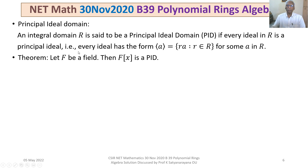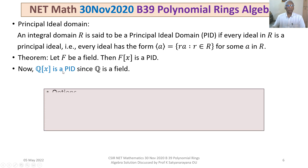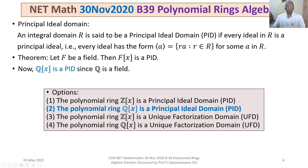We recall a theorem: let F be a field, then the polynomial ring F[X] is a PID. It is a very well known result. Since Q, the set of rational numbers, is a field, the polynomial ring Q[X] is a PID. Looking at our options, option 2 states precisely that Q[X] is a PID. Therefore, option 2 is true.